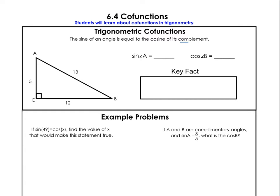First, we see this word 'complement.' That means two angles that add up to 90 degrees. Angle A and angle B are complements to each other. This is a triangle, and if this angle is 90, then angle A and B also have to add up to 90. So if this was 30, this would have to be 60, because 30 plus 60 plus 90 equals 180. A and B add up to 90 every single time.